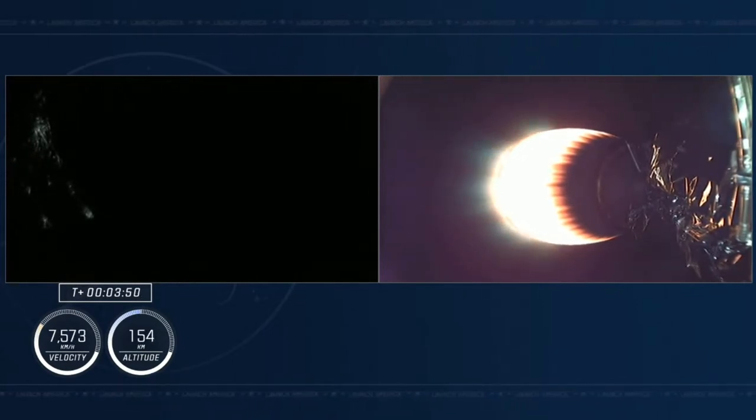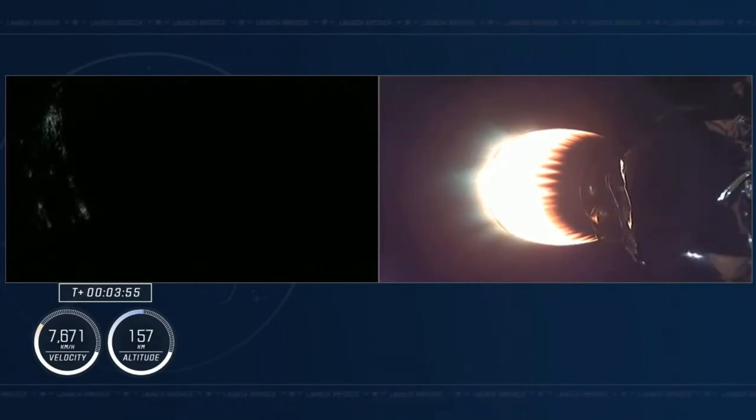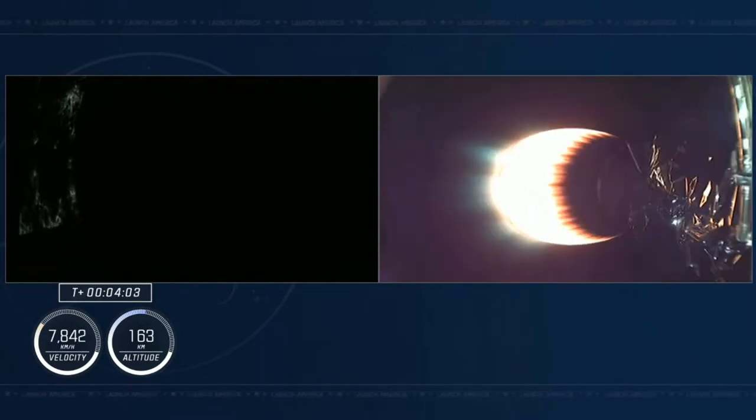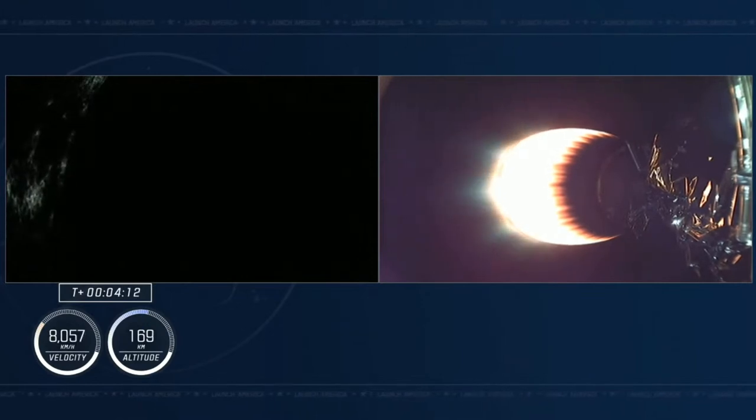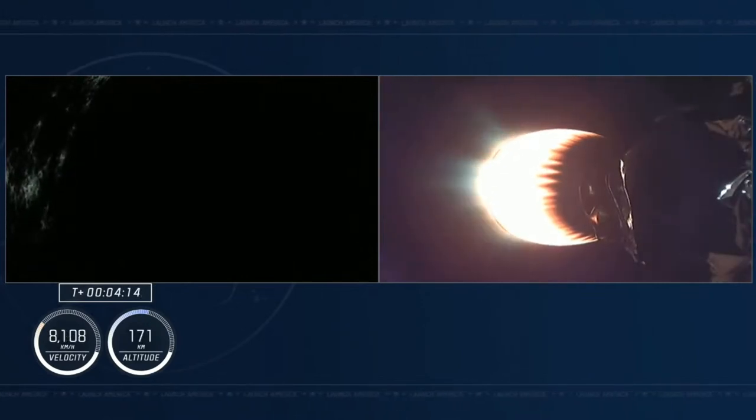We started acquisition of signal Bermuda. Dragon, SpaceX, nominal trajectory. Freedom copies, nominal trajectory. That was our guidance, navigation, and control officer. Nominal trajectory. Dragon's pointed in the right direction, continuing its flight to orbit. We heard Bermuda called out. That's one of the ground stations now receiving telemetry from the Dragon as it continues its path uphill.